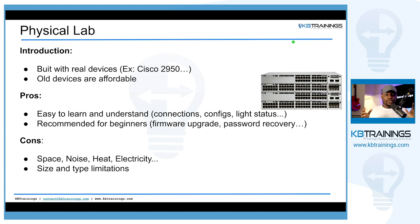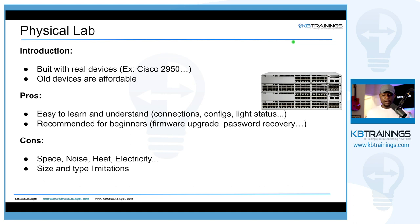Lesson number one is about physical labs. You build your lab with real devices — you go out and buy them and build your lab. It's the best way because in a work environment most of the time you deal with physical devices. Of course, many companies are moving to the cloud, but you'll still see a lot of physical devices. Old devices are affordable since new technology can be expensive. The pros are that it's easy to learn when you can physically see the device, touch it, connect to it, see the link lights, and see everything going on.